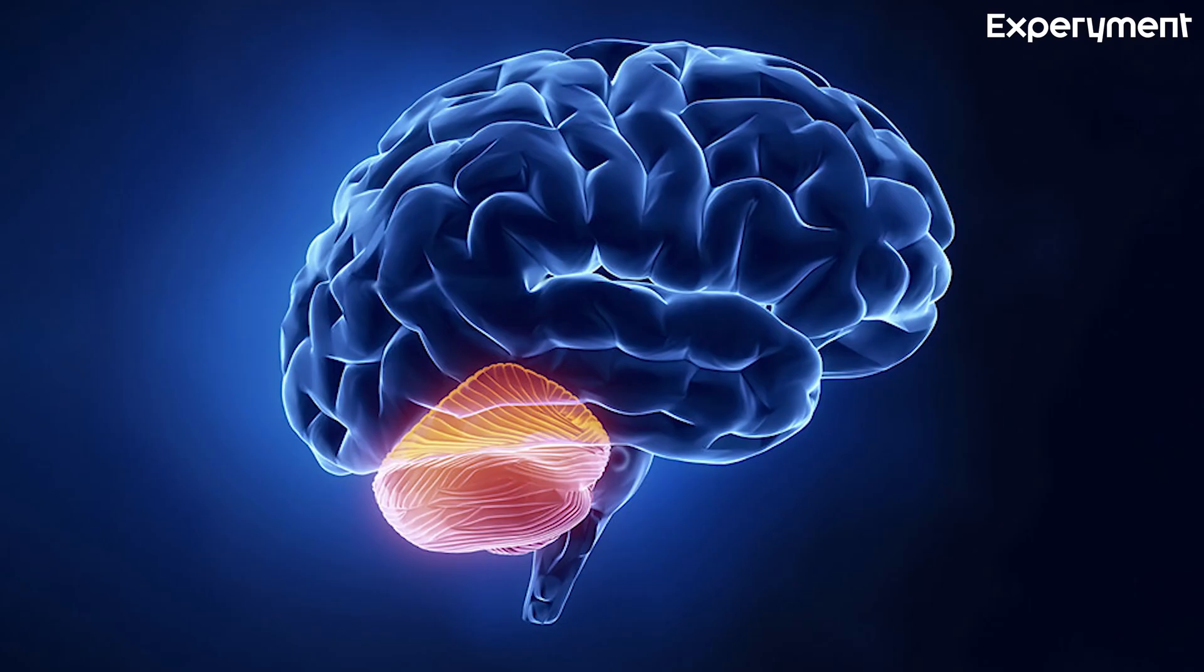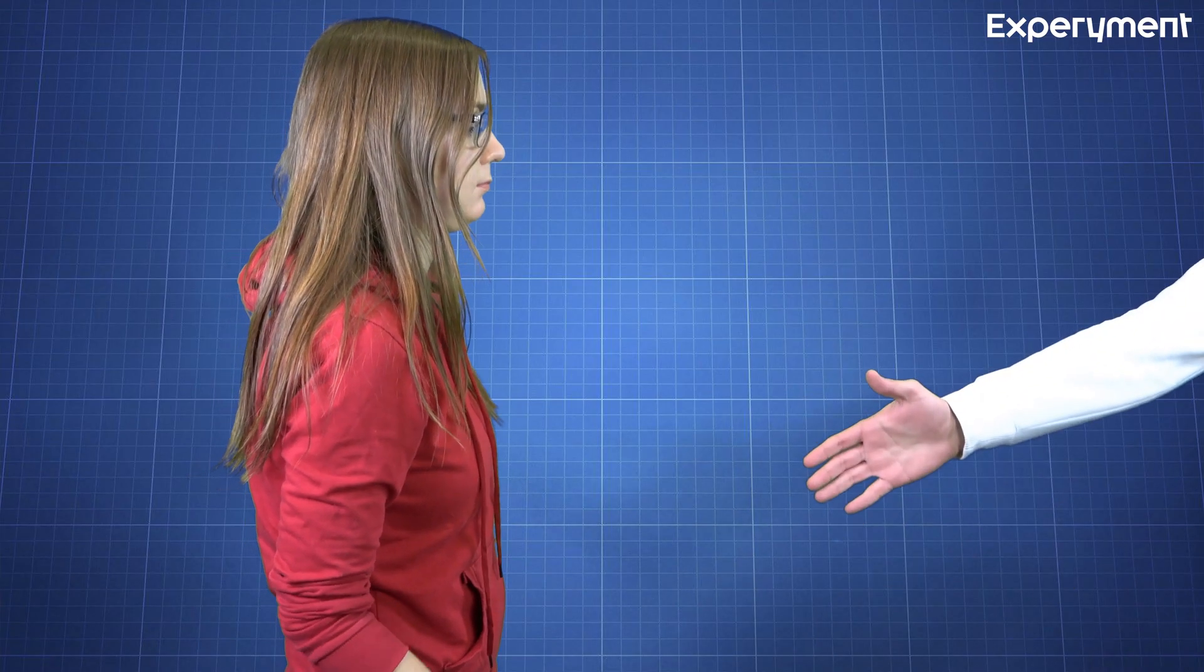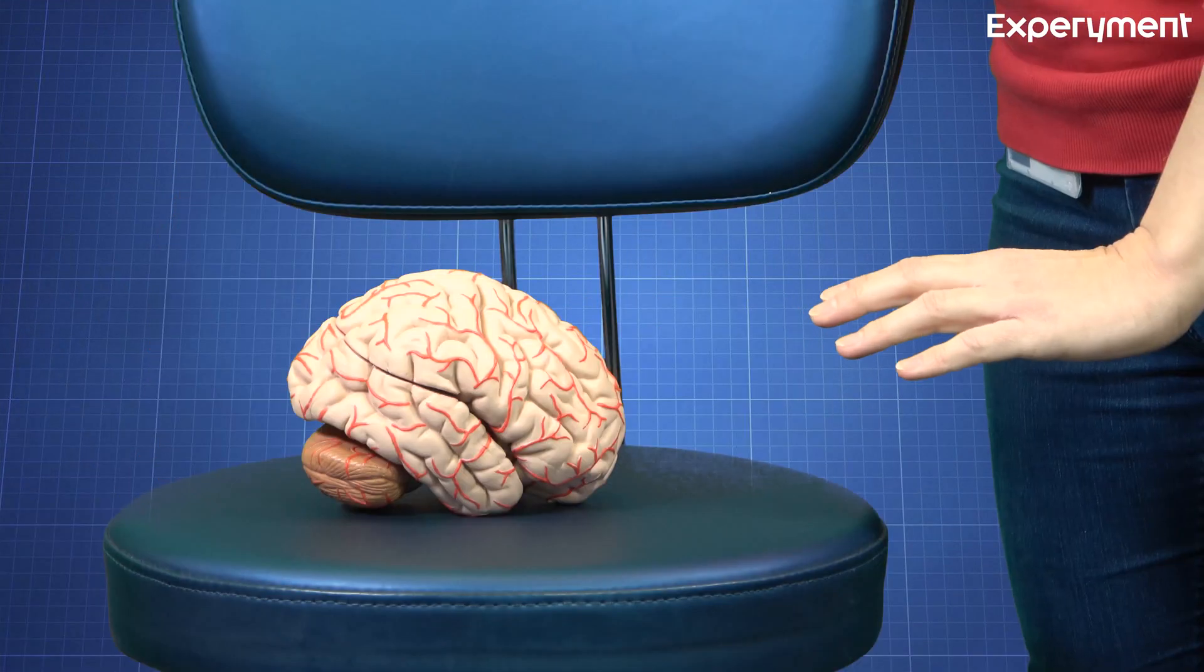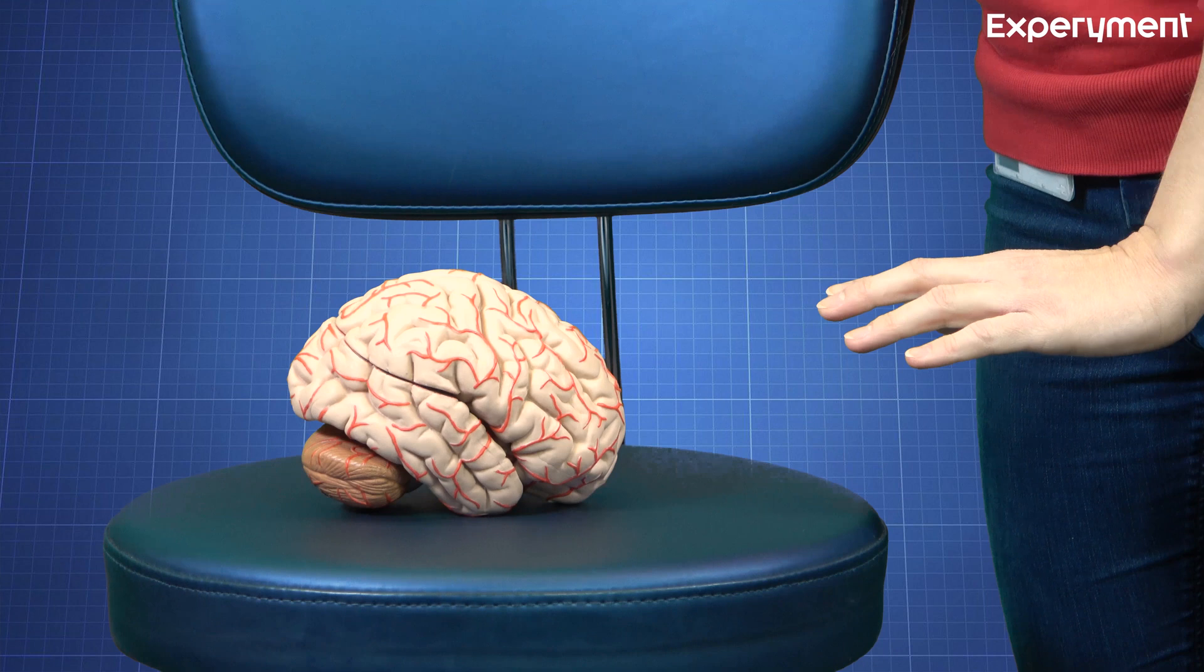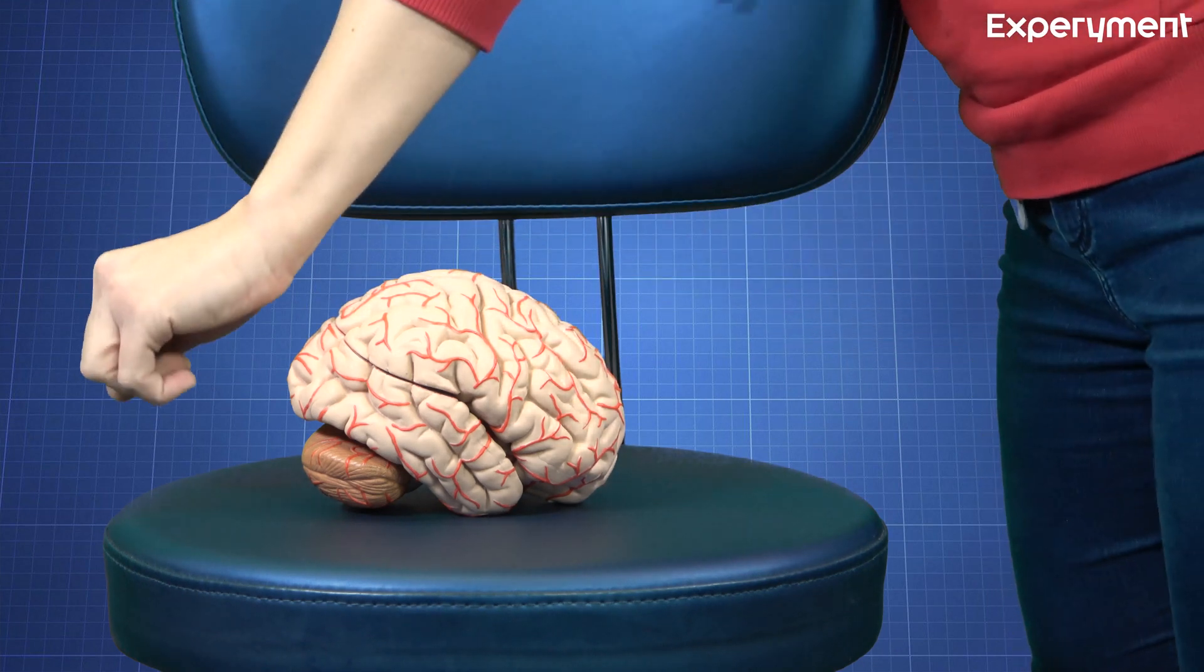When the cerebellum is removed, three major changes occur. The movements are slow, they don't have enough force, and they delay to turn off and usually go well beyond the intended mark.